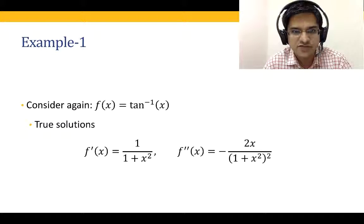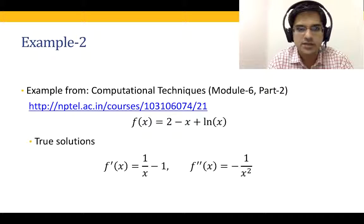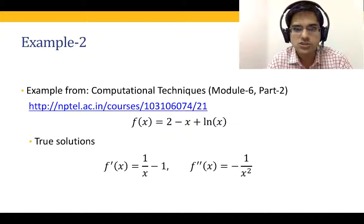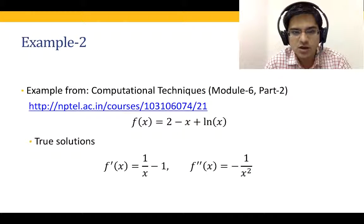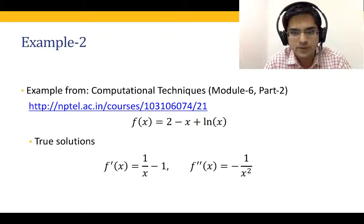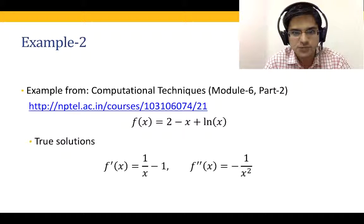Now that we have considered f''(x) for arctan(x), let us go on to the next example. This example was taken from the computational techniques course, module 6, part 2. For this, f(x) = 2 - x + ln(x). We are going to find f'(x) and f''(x) for this function using central difference formulas. I recommend you pause and try solving this for h = 1e-4 before continuing.